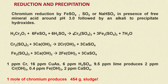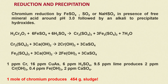Coming back to the chemistry, chromium reduction can be accomplished by ferrous sulphate, sodium sulphur dioxide, sodium sulphite, hydrosulphite, and many other reducing agents, in the presence of free mineral acid around pH 3, followed by alkali addition to precipitate the hydroxides.